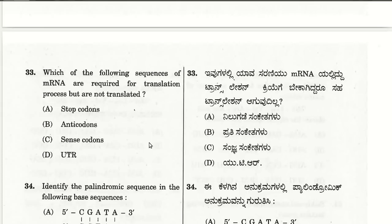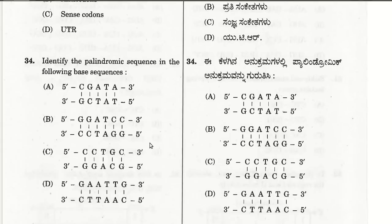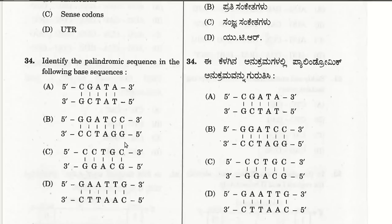The thirty-fourth question: identify the palindromic sequence from the given base sequences. The answer is GGATCC — it reads the same from 5' to 3' on both strands. If you read from 5' to 3' it is GGATCC, and again from 5' to 3' on the complementary strand it is also GGATCC. So this is a palindromic sequence, and the second choice is right.